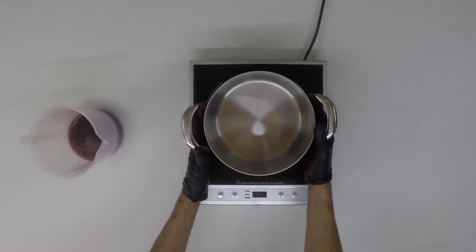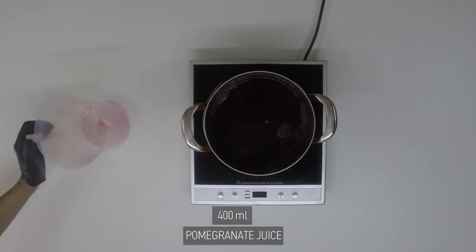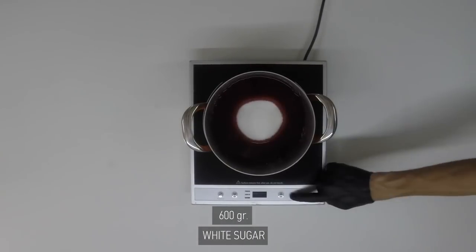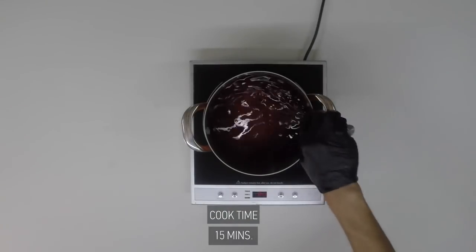In a pot, you will add 400ml of freshly squeezed pomegranate juice, 600g of white sugar, and you will cook it at 80 degrees Celsius for 15 minutes.